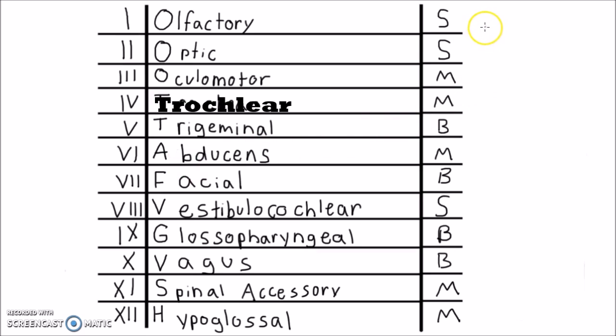As it turns out, the cranial nerves with purely sensory function are actually considered special sensory. The olfactory nerve conducts olfaction (smell), the optic nerve conducts optics (sight), and the vestibulocochlear nerve conducts hearing and equilibrium.